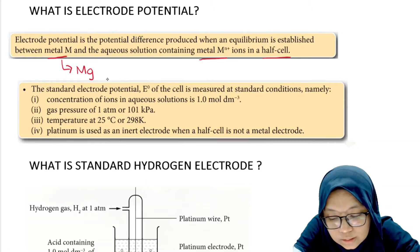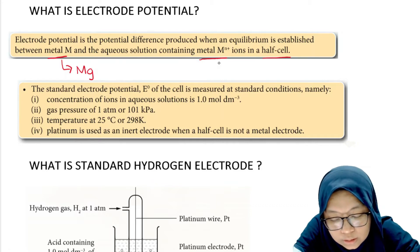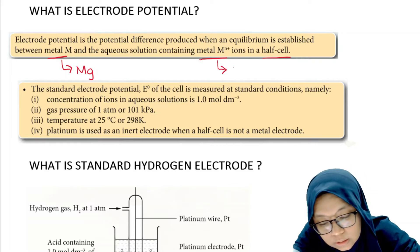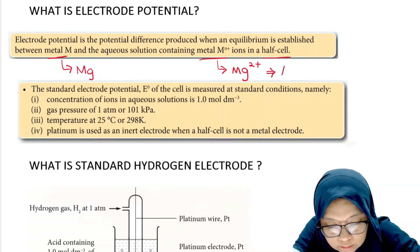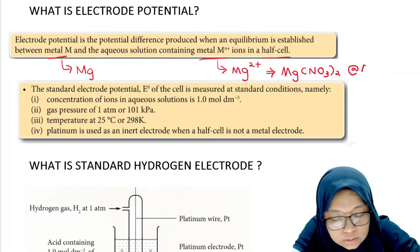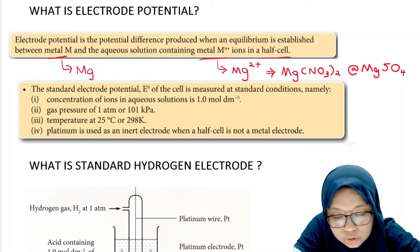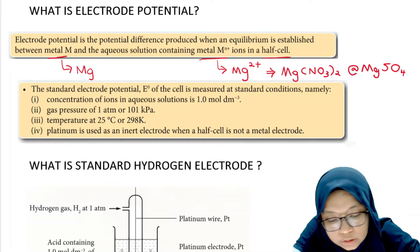For example, if we want to determine the electrode potential for magnesium metal, we will need magnesium as the electrode and an aqueous solution that contains M^(n+) ion — meaning you have to use the magnesium 2+ ion solution. For example, you can use magnesium nitrate solution or magnesium sulfate, as long as you have the magnesium ion inside the solution. I will give you an example of what it means by a half cell later.